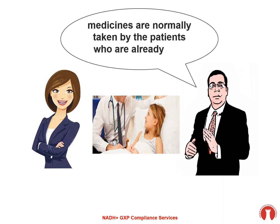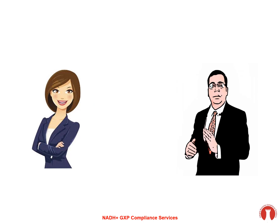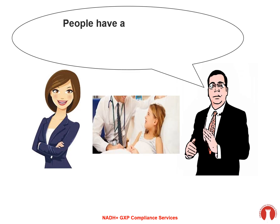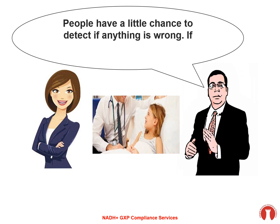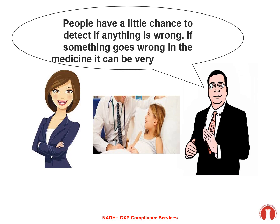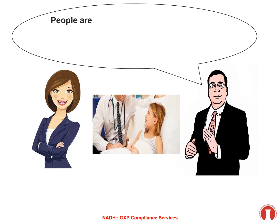Medicines are normally taken by patients who are already with low immunity. People have little chance to detect if anything is wrong. If something goes wrong in the medicine, it can be very dangerous. People taking medicines rely mostly on trust.